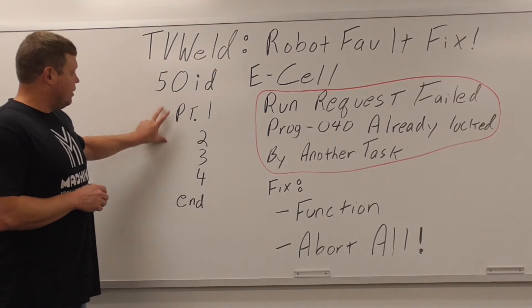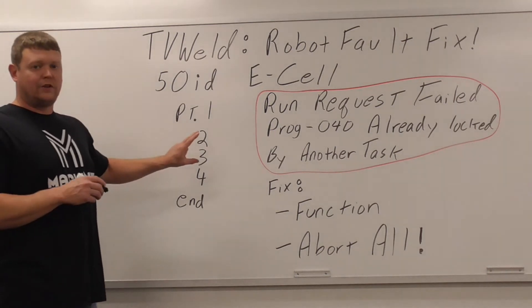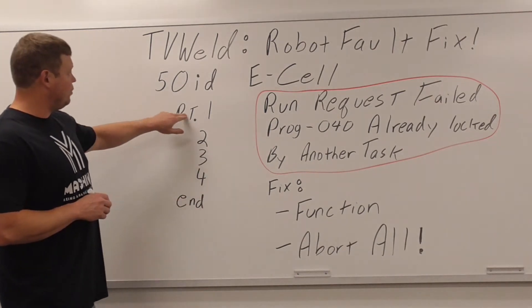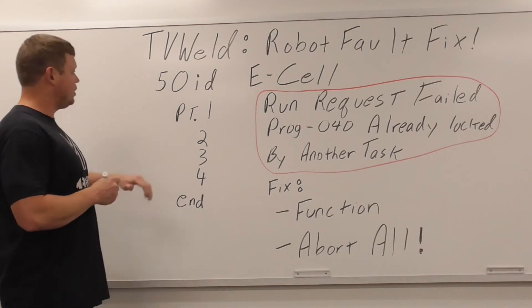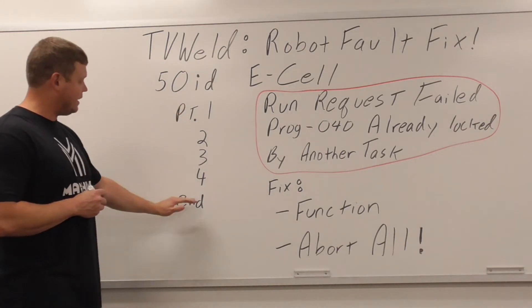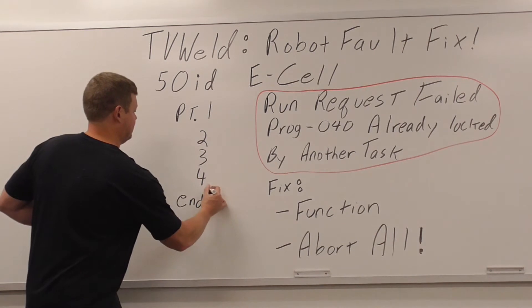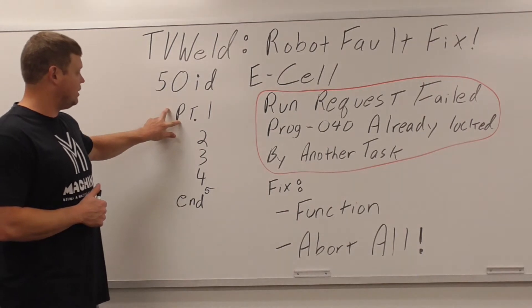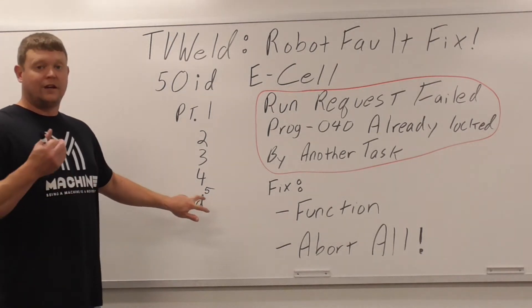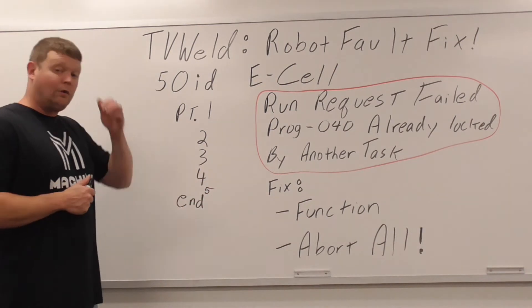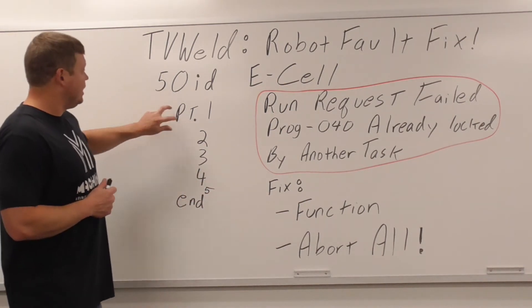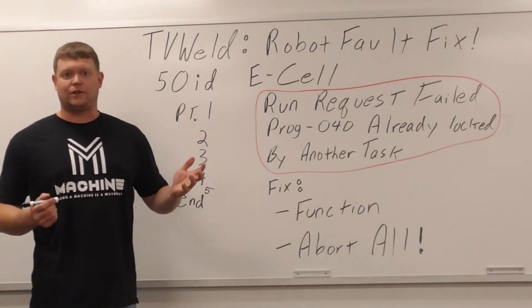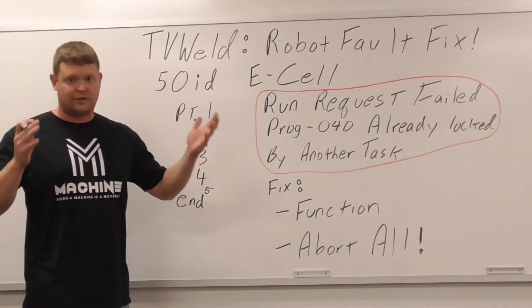The way that I got it was, this is a program here with 4 points. What I do when I program, at the very end you get down here to end, I scroll back up to point 1 and I hit shift forward. Then once it goes to point 1, I scroll back down here to end and I put the 5th point in here. Basically, when you jog it to point 1, that's going to make sure that point 5, your end point, is going to be the exact same point. When I got the fault, it's when I scroll up to point 1, I hit shift forward, and then I'll get this fault.